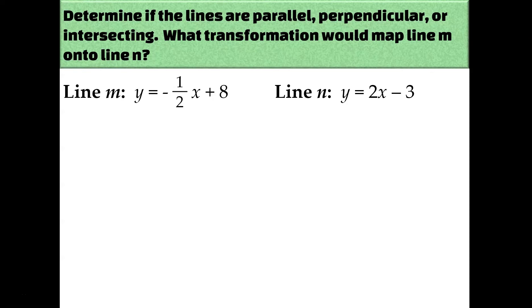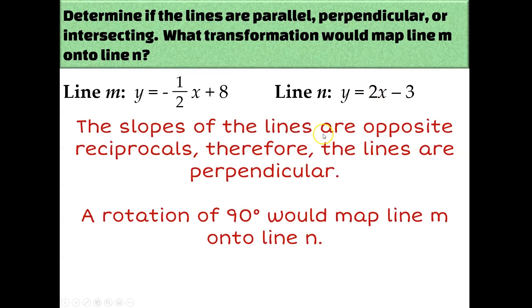For this example, it's easy to figure out our slopes because these are written in slope-intercept form, y equals mx plus b. The slope of line m is the m value: negative one half. The slope of line n is its m value: positive 2. Those two slopes are opposite reciprocals — negative one half and positive two over one are opposite and reciprocal. Therefore the lines are perpendicular, and even without graphing, you can tell that a rotation of 90 degrees would map one onto the other.